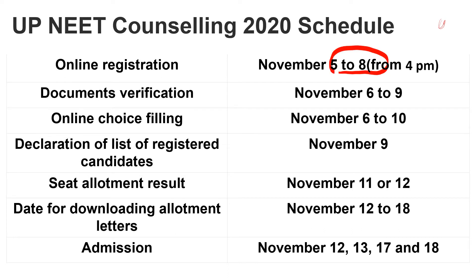You can do online registration; its fees will be 2000 rupees. Then document verification you have to do between 6 November and 9 November, and your documents — academic certificates, caste certificate — will be verified. At the same time you also have to deposit the security fee, and submit its DD. Then between 6 November and 10 November will be your choice filling.